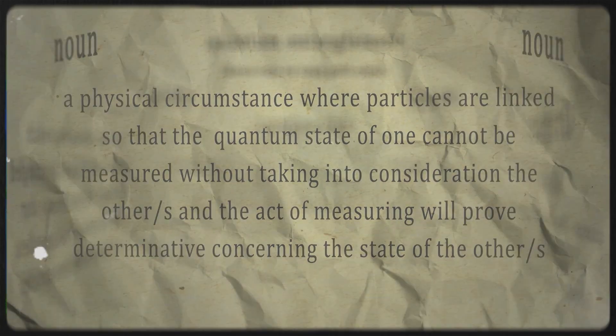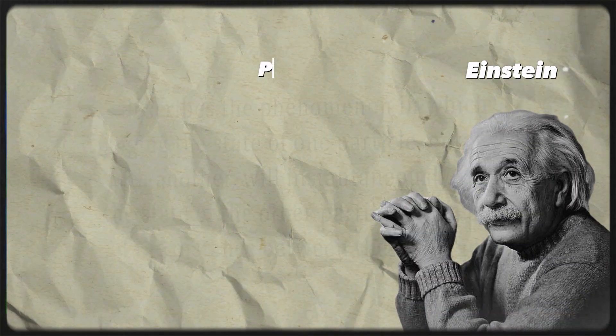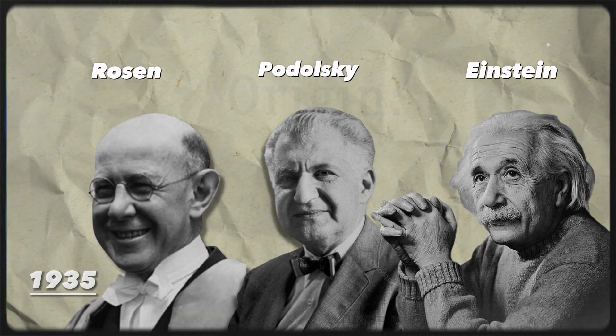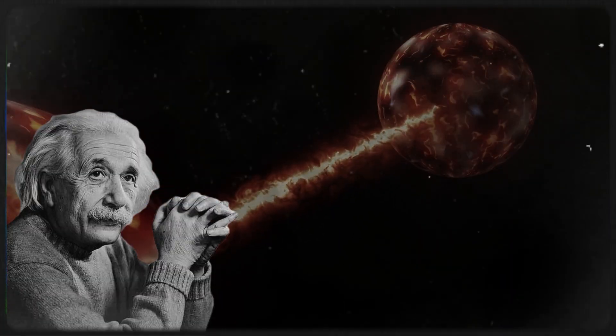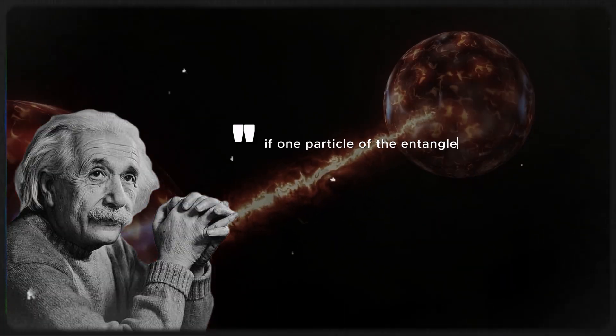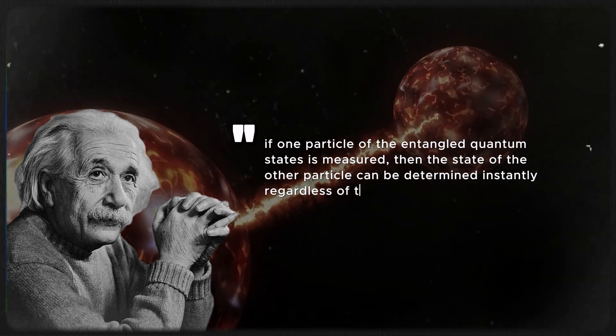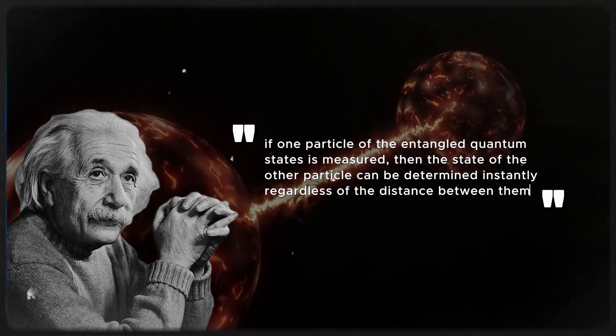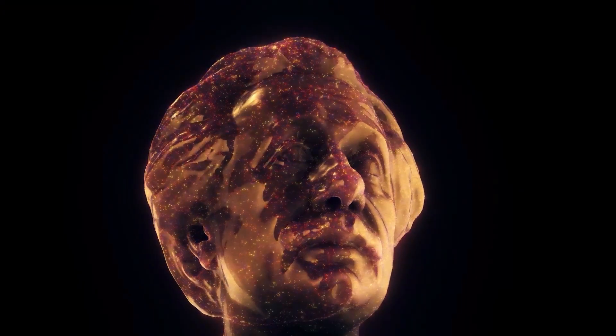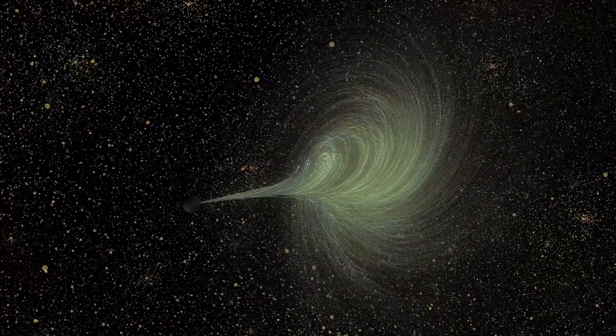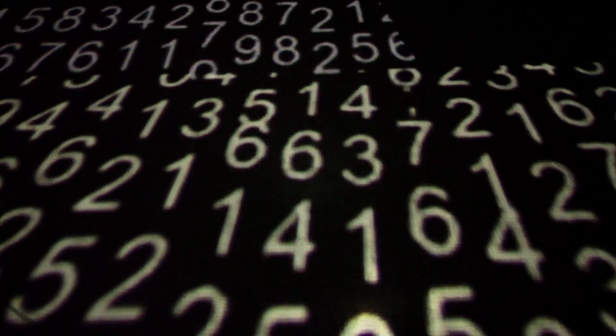This unique concept of quantum entanglement was later explained in a thought experiment by Albert Einstein, Boris Podolsky, and Nathan Rosen called the Einstein-Podolsky-Rosen paradox in 1935. Einstein hypothesized that if one particle of the entangled quantum states is measured, then the state of the other particle can be determined instantly regardless of the distance between them. Einstein also argued that if this happens, then it violates the principles of local realism.